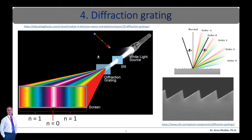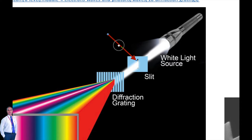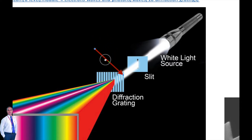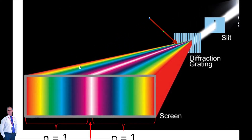In this diagram, you can see a white light source — a torch — and when the light from this source is incident on a small slit and then passes through the slit and is incident on a diffraction grating, we can see a rainbow-like structure called the diffraction spectrum.